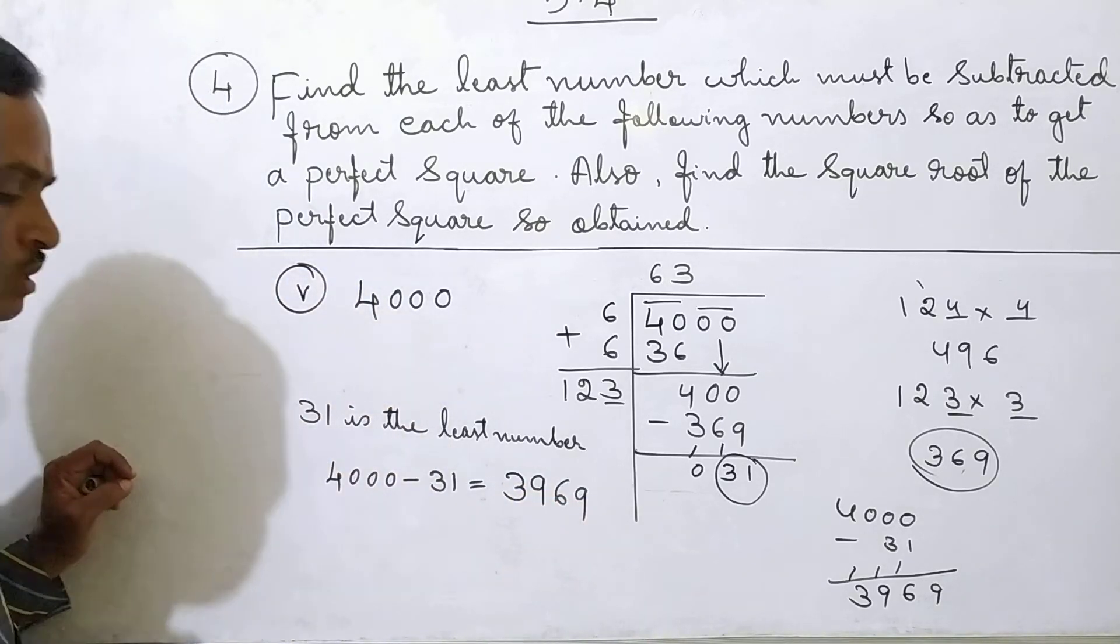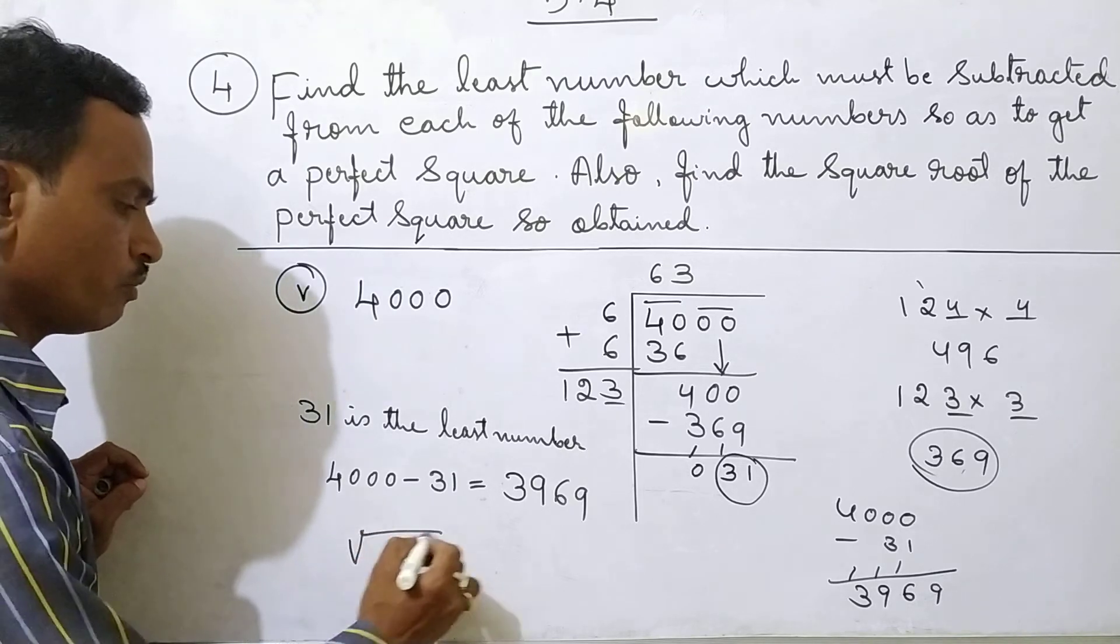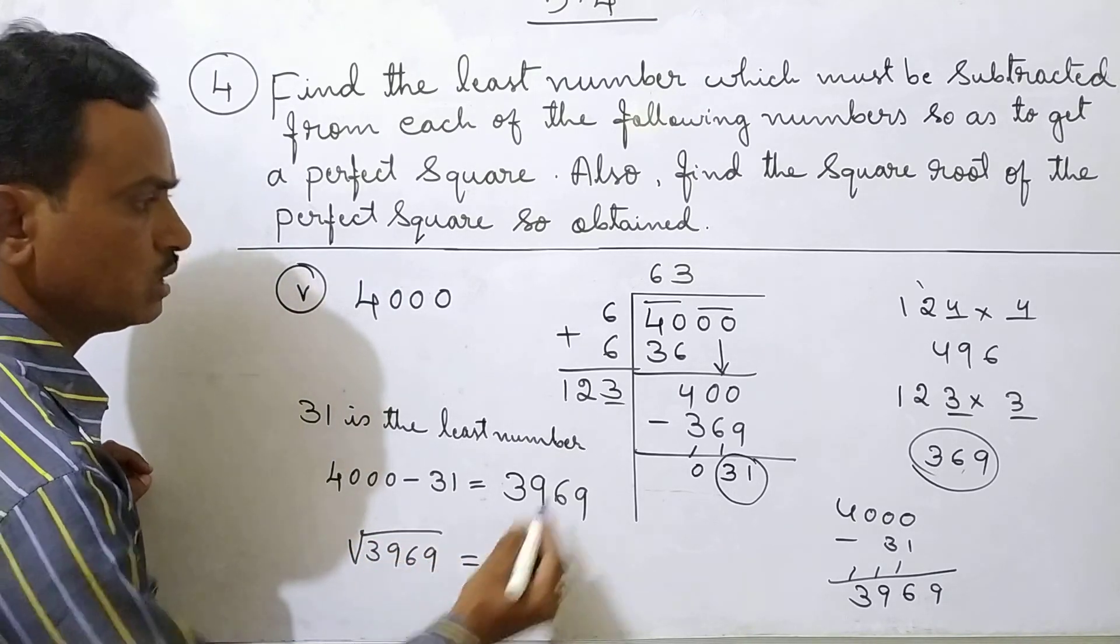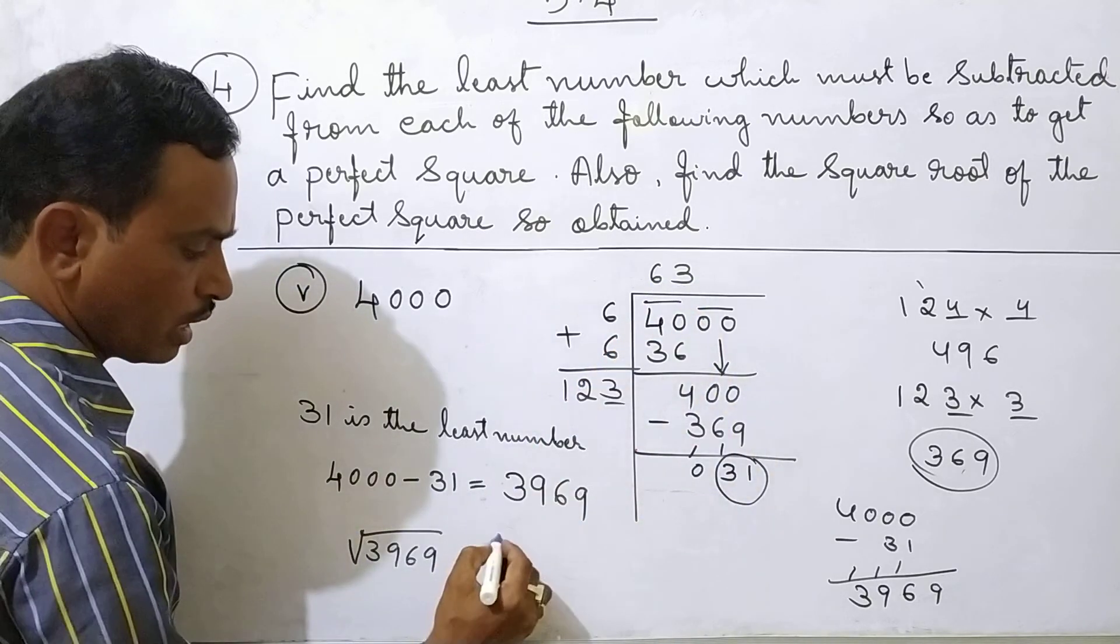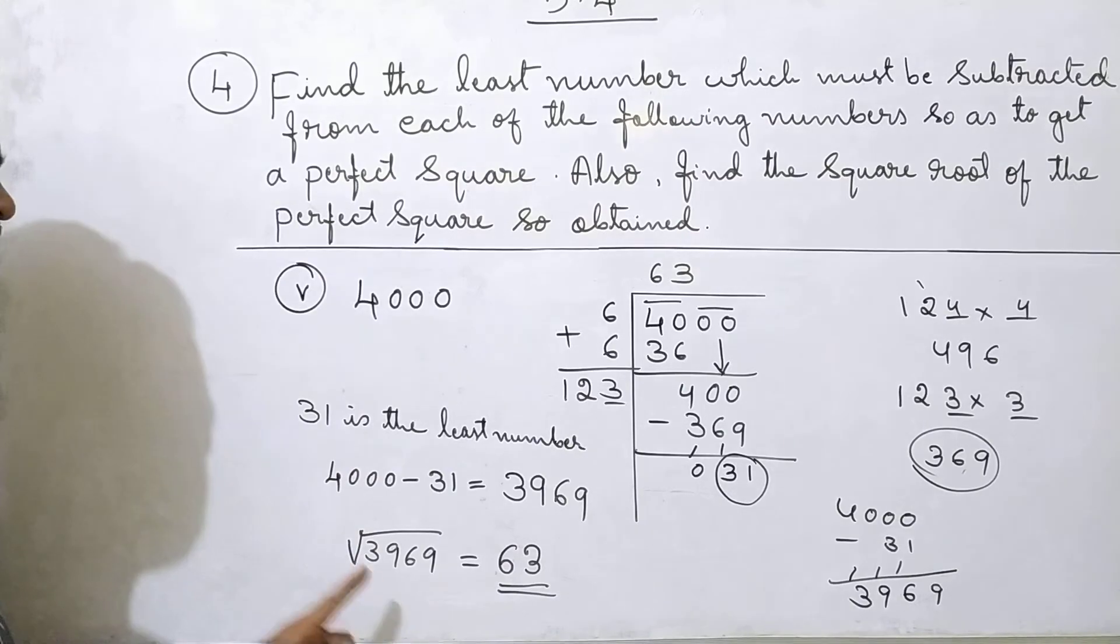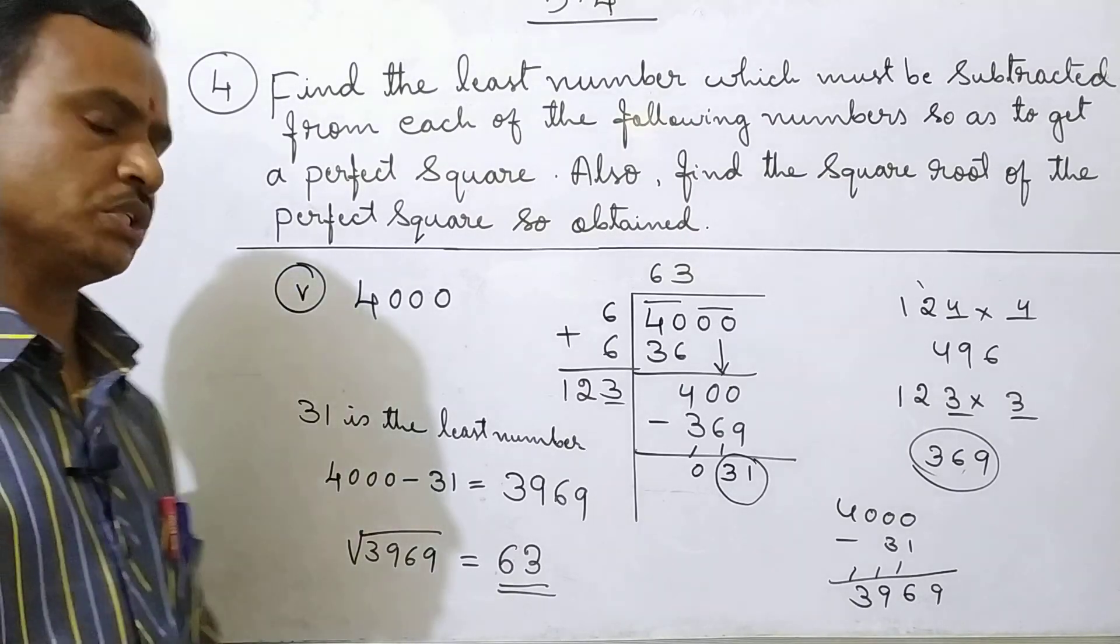It become a perfect square number. Now square root of 3,9,6,9. This is equal to what we got here? 63. So you should write 63. Square root of 3,9,6,9 answer is 63.